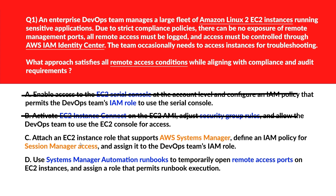Let's move to option C. Option C is: attach an EC2 instance role that supports AWS Systems Manager, define an IAM policy for Systems Manager access, and assign it to the DevOps team's IAM role. Session Manager meets all compliance needs — no open ports, activity auditing, and IAM Identity Center integration for access control. Let's keep this and move to D.